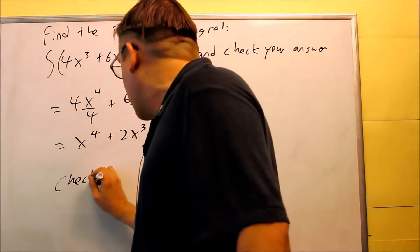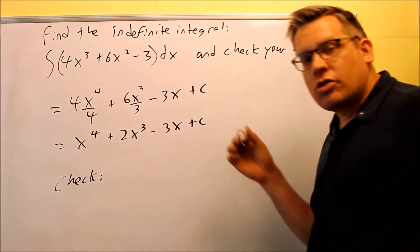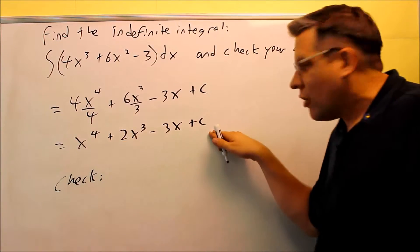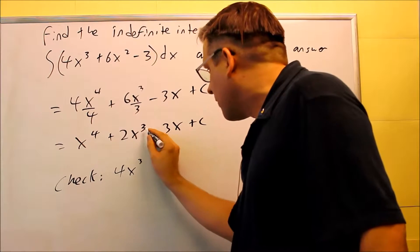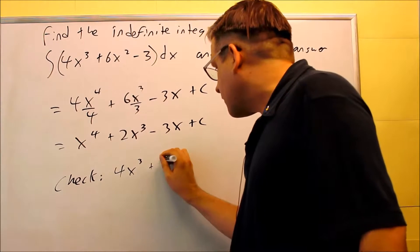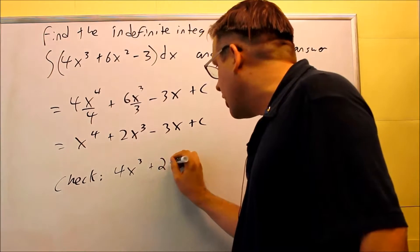Now, if I want to do a check on it, I would just take the derivative of my answer. 4 comes down, x, subtract 1 from that power. Then I have the 2 here, 3 comes down, subtract 1 from that power.